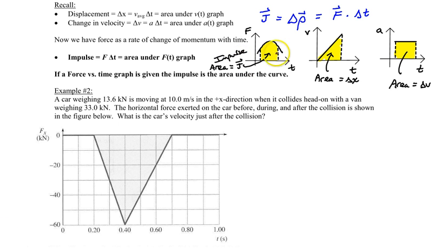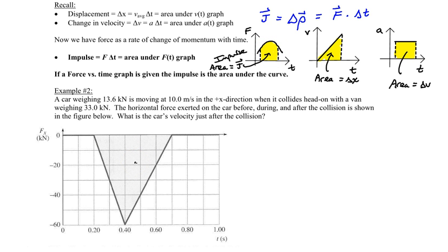If the area is above the axes, that is a positive impulse in the direction we have defined. And if the area falls below the axes, as you'll see in example two, then that impulse is in the negative direction.